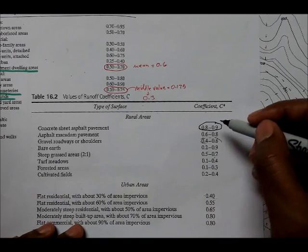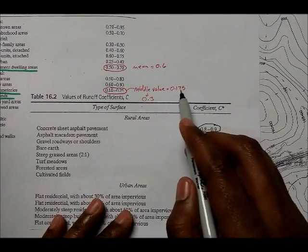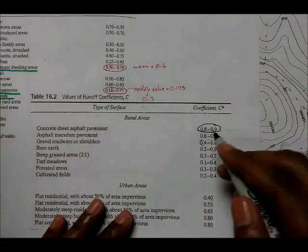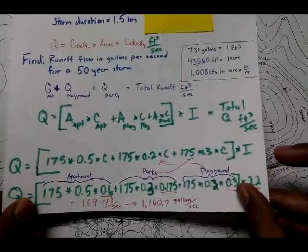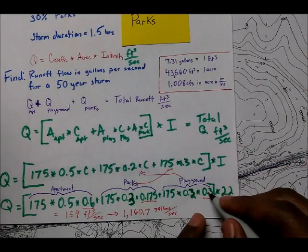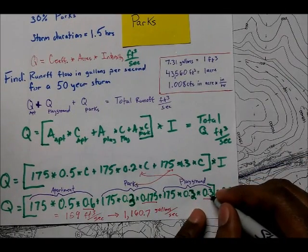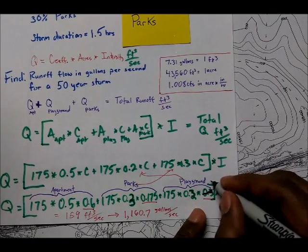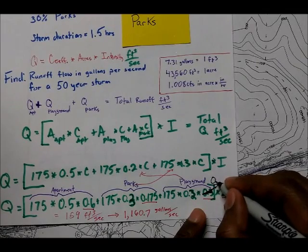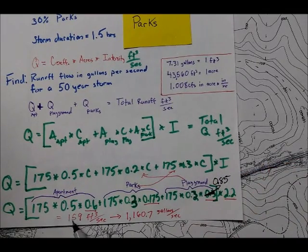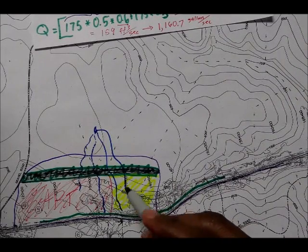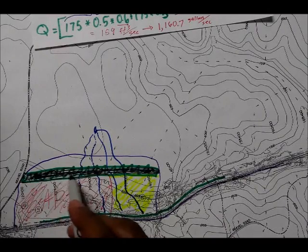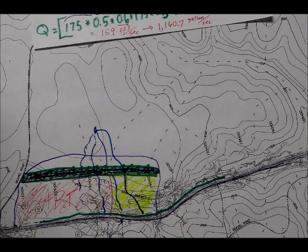It increased from 0.3 to somewhere 0.85. So, that means instead of having a coefficient that has a 0.3, it would then change to a higher coefficient. Let's say 0.85, which would produce a higher flow of runoff, which means our drainage structure down here may need to increase due to the change in surface area or the type of surface that has been paved over.